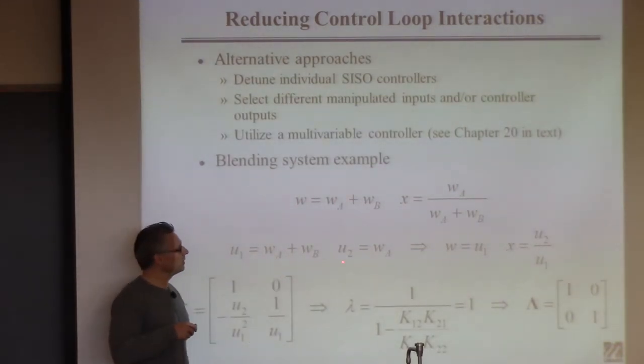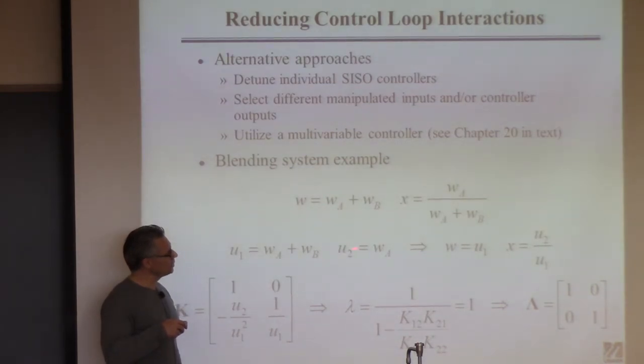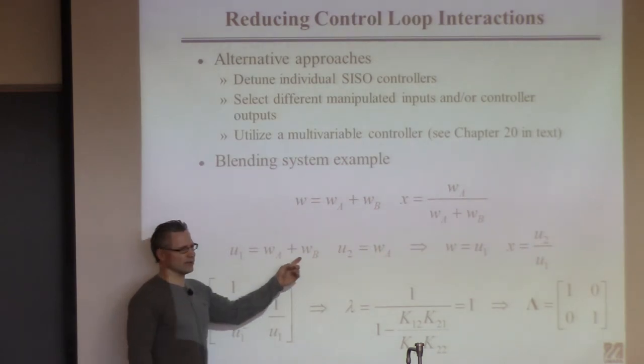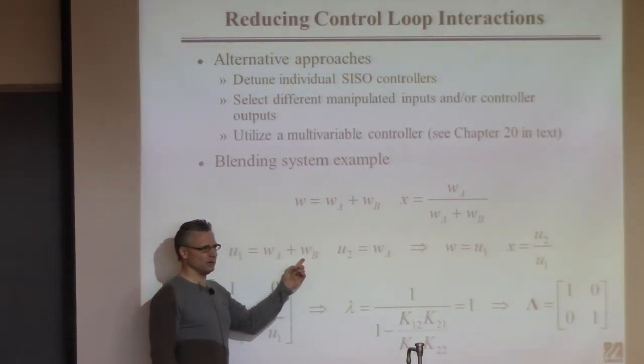So I've just redefined the inputs. Obviously if I have a control that calculates U2 that's WA, if I have a control that calculates U1 that's the sum, I know WA so I can figure out WB and implement it, not a problem.